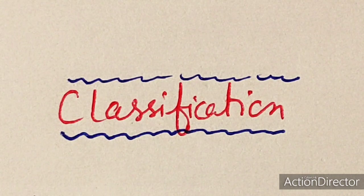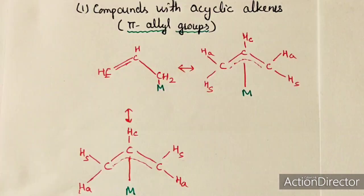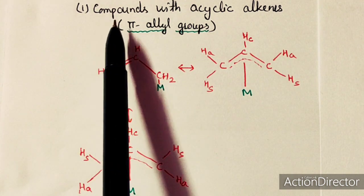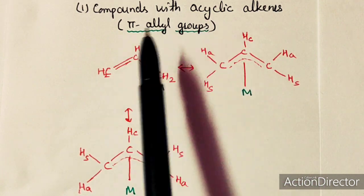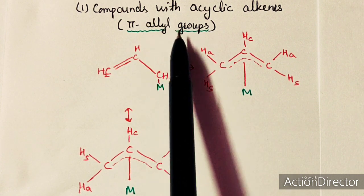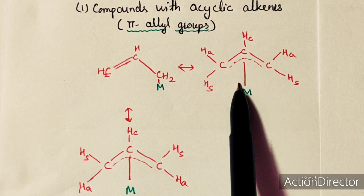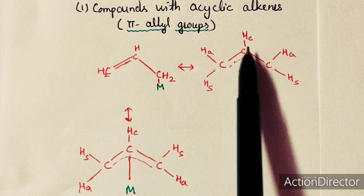We will discuss the classification of fluxional molecules — four types of fluxional compounds. The first group showing fluxional behavior is compounds with acyclic alkenes, specifically pi-allyl groups and how allyl groups can show fluxionality.